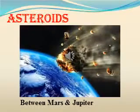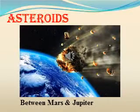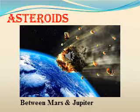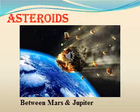Apart from stars, planets, and satellites, there are numerous tiny bodies which also move around the Sun. These bodies are called asteroids. They are found between the orbits of Mars and Jupiter. Most scientists hold the view that asteroids are parts of a planet which exploded many years back.